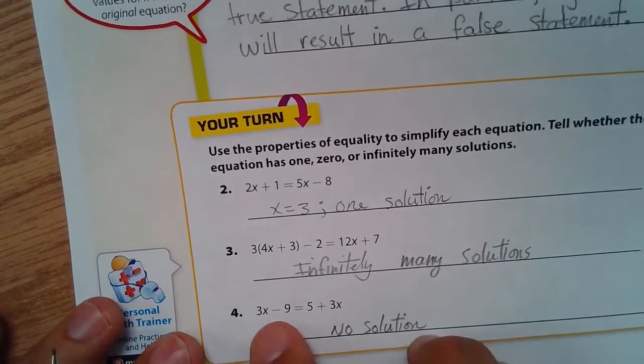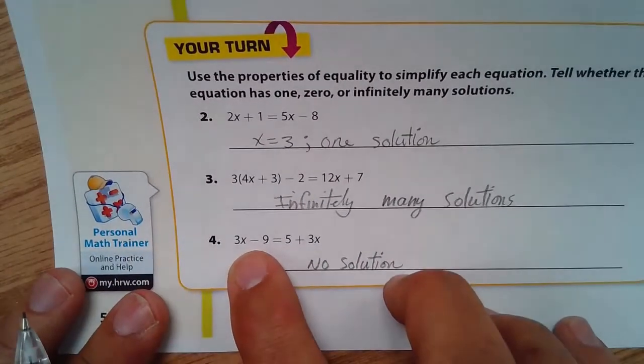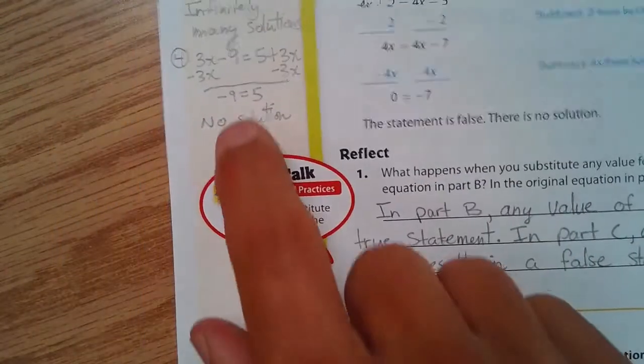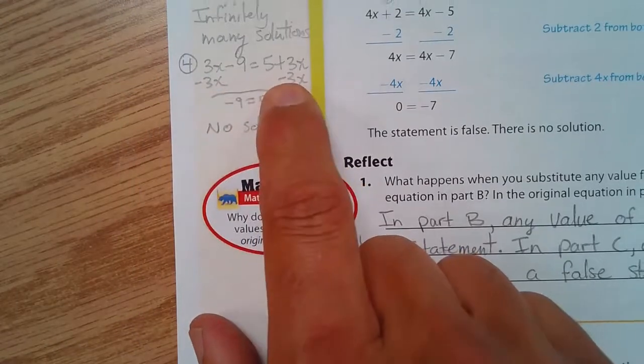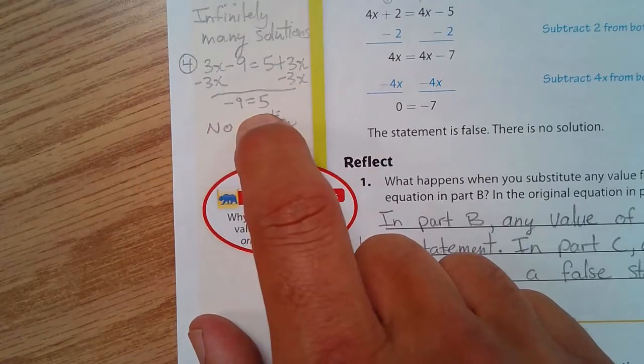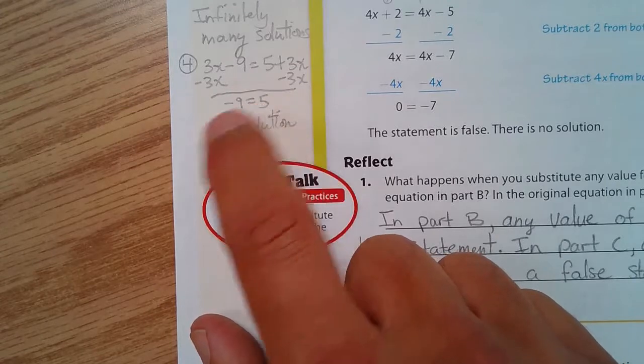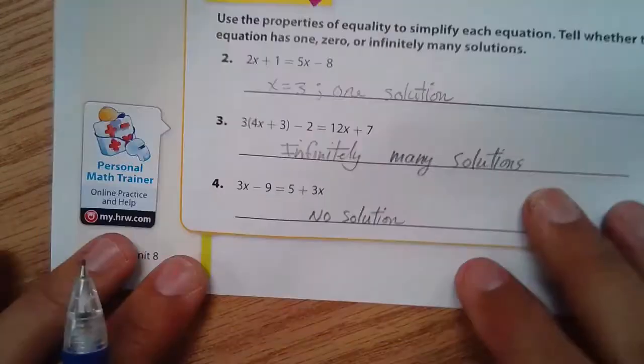And then the last one, I have this right here. And I did that here. I subtract 3x from both sides. I get negative 9 equals 5. And there is an untrue statement. There's no solution to that one. That's why I wrote no solution.